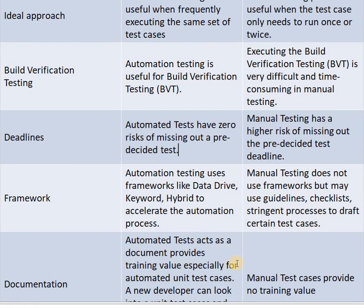Next parameter is deadline. In automation testing, there is zero risk of missing out on pre-predicted tests, but in manual testing there is a higher risk of missing the predicted test deadline.